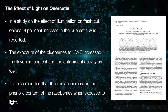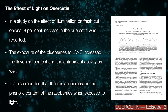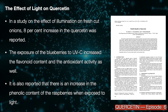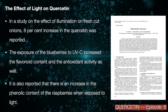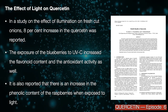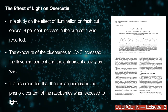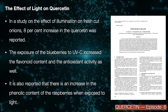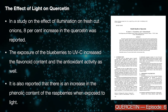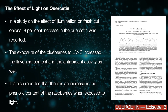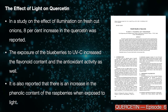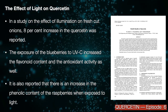In a study on the effect of illumination on fresh cut onions, an 8% increase in quercetin was reported. The exposure of blueberries to UVC increased the flavonoid content and the antioxidant activity as well. It is also reported that there is an increase in the phenolic content of raspberries when exposed to light.